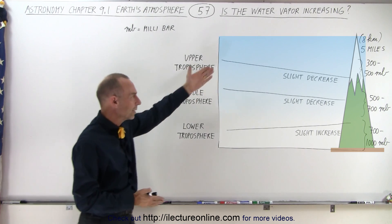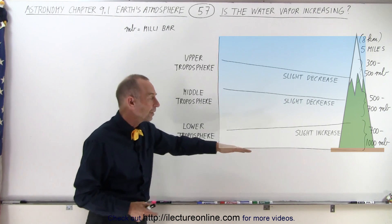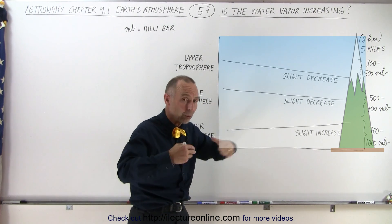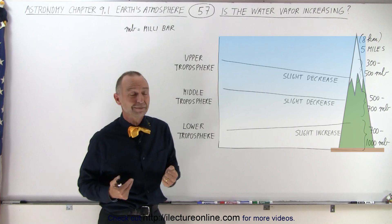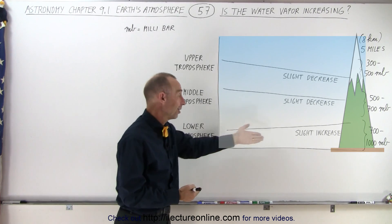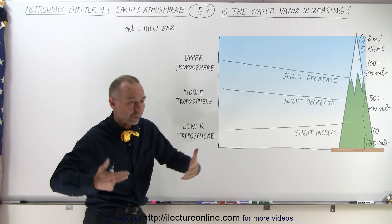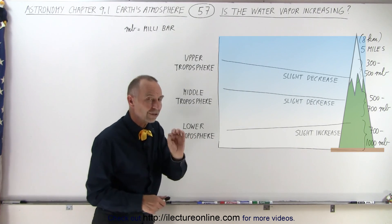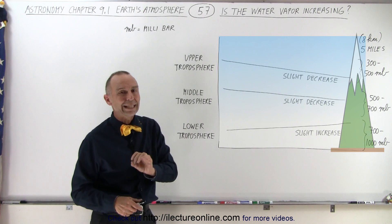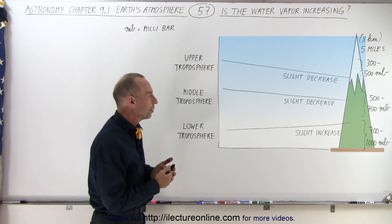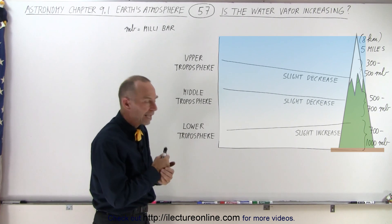And so together, when we add all the various layers of the troposphere, the bottom layer does of course have more weight to it, literally, because there's more water vapor and more atmospheric pressure, so there's more atmospheric molecules, but together there's actually a very tiny increase in the total water vapor content of the atmosphere.